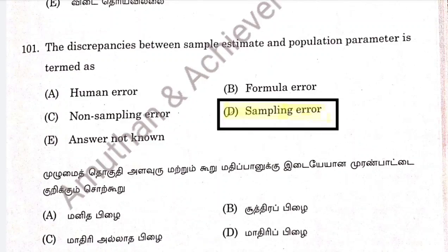Dear viewers, Amodan and Achievers are going to be here. This is the Nethan statistics paper Part 1 and Part 2 answer keys. Question No. 1, answer key 1001. Question No. 1, answer key 155.